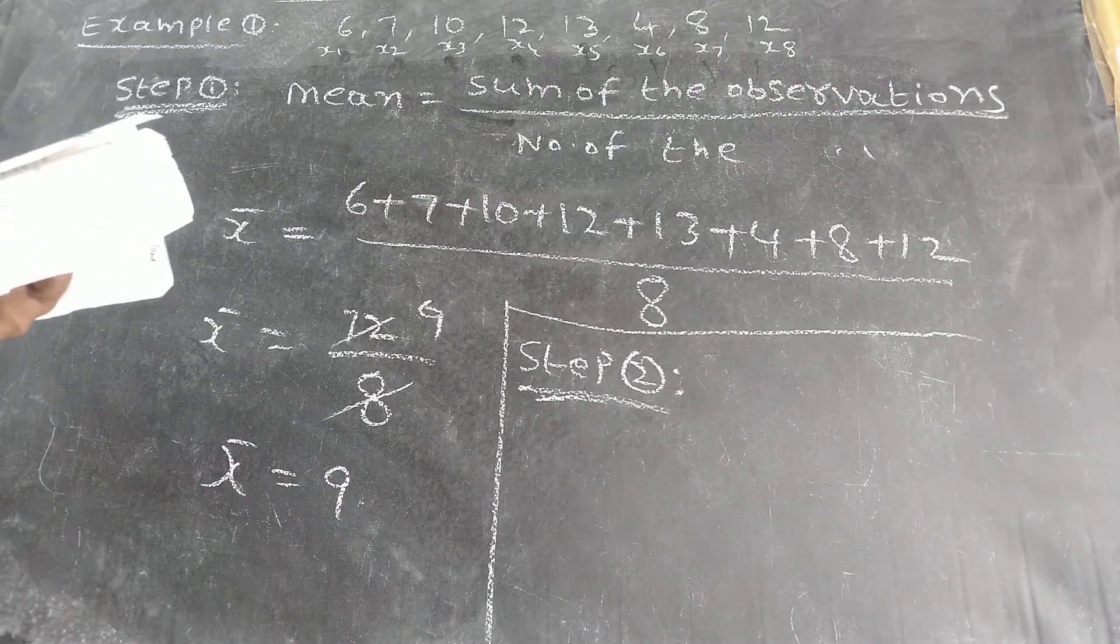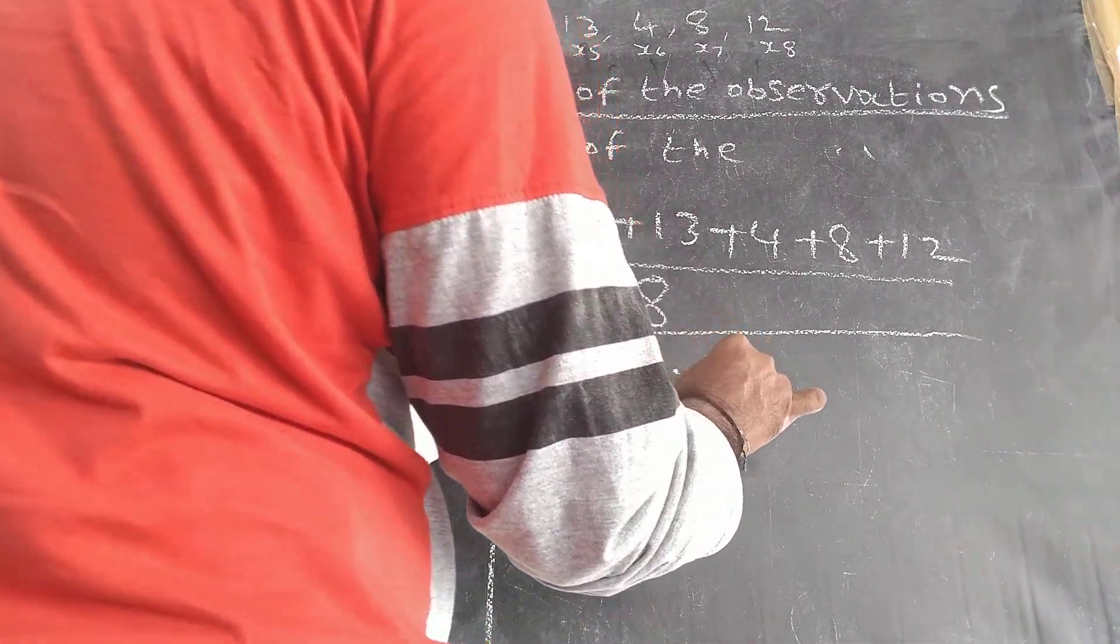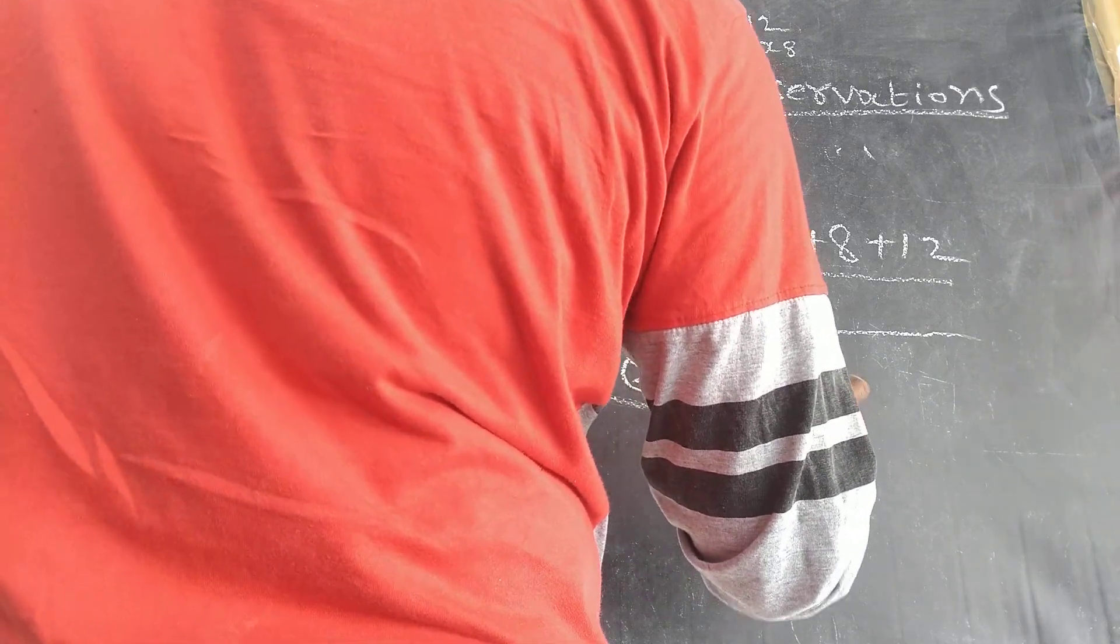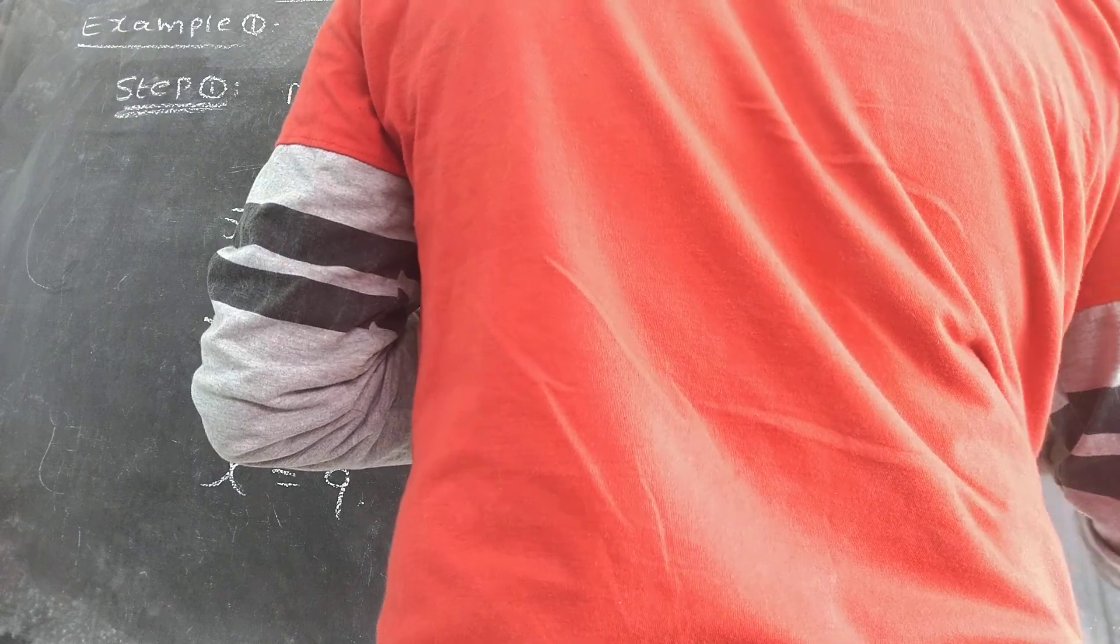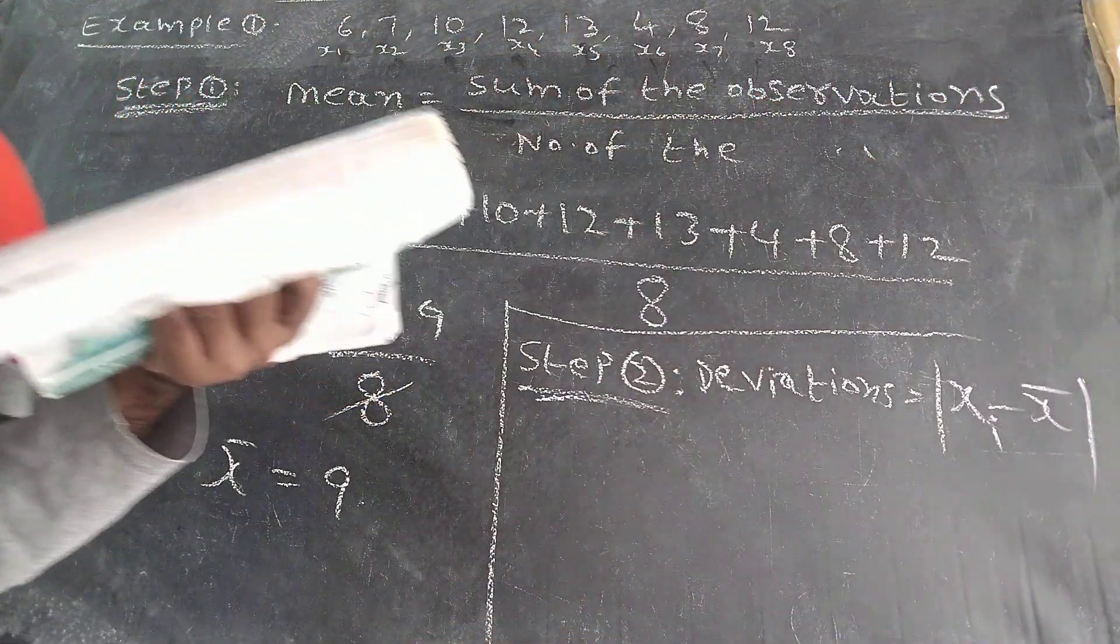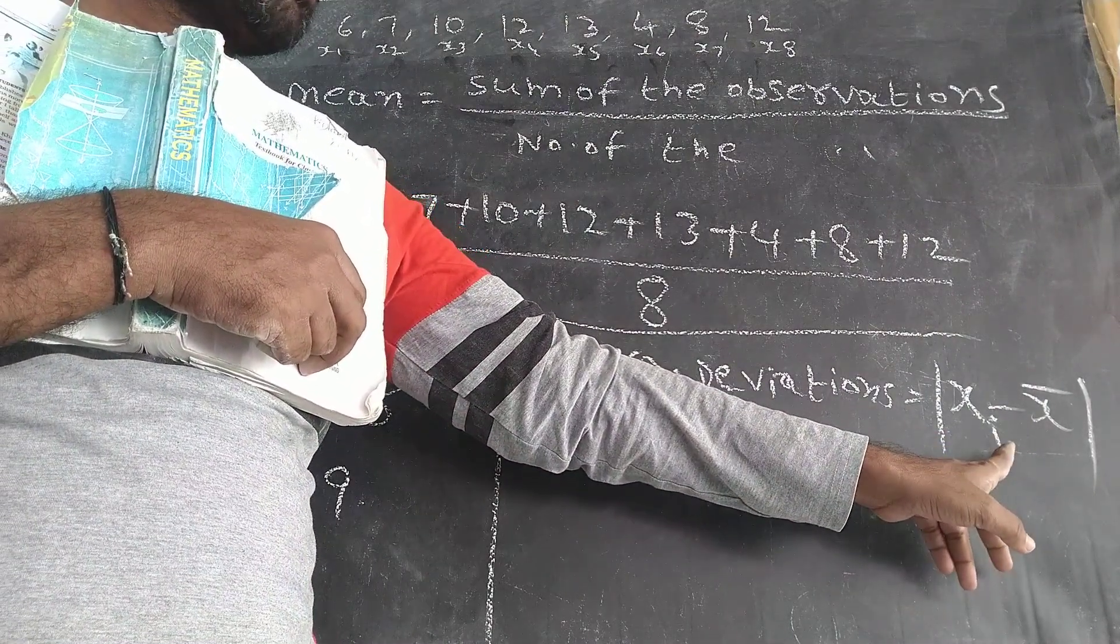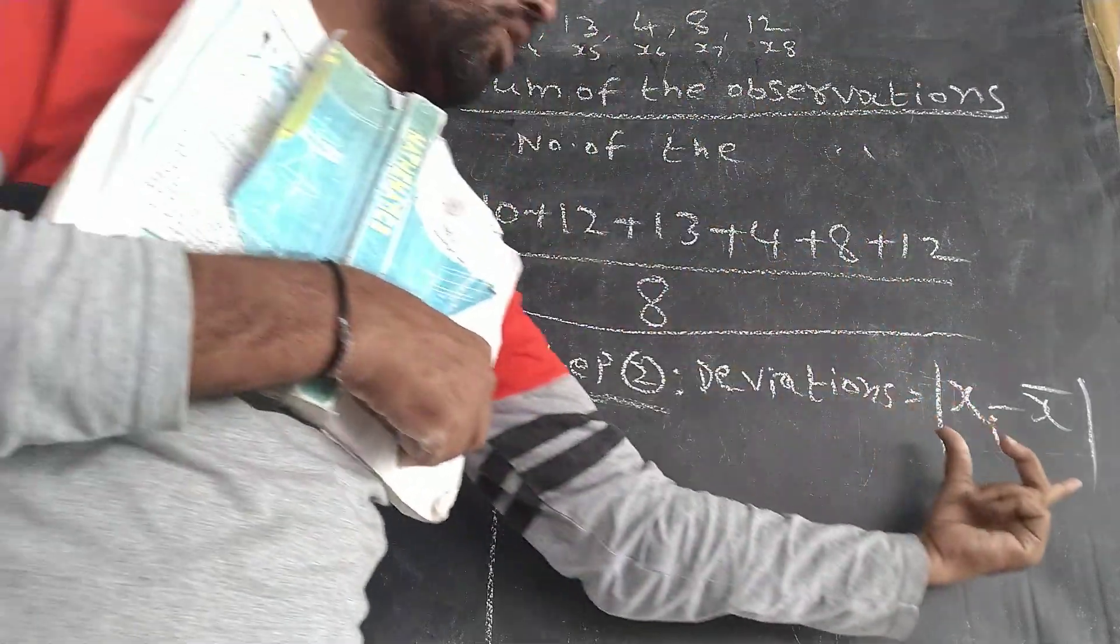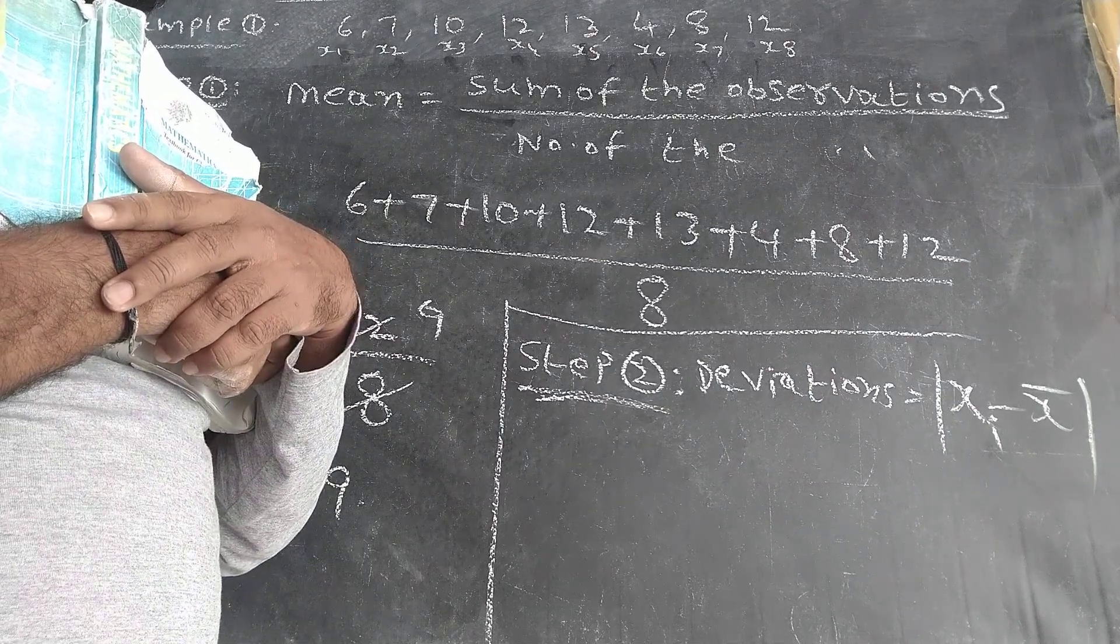Now here, second column, I will write the absolute deviations. Deviations means what you can write: mod of X1 minus median, X2, X3, X4, X5, X6, X7, X8. Mod means we are going to find the median.